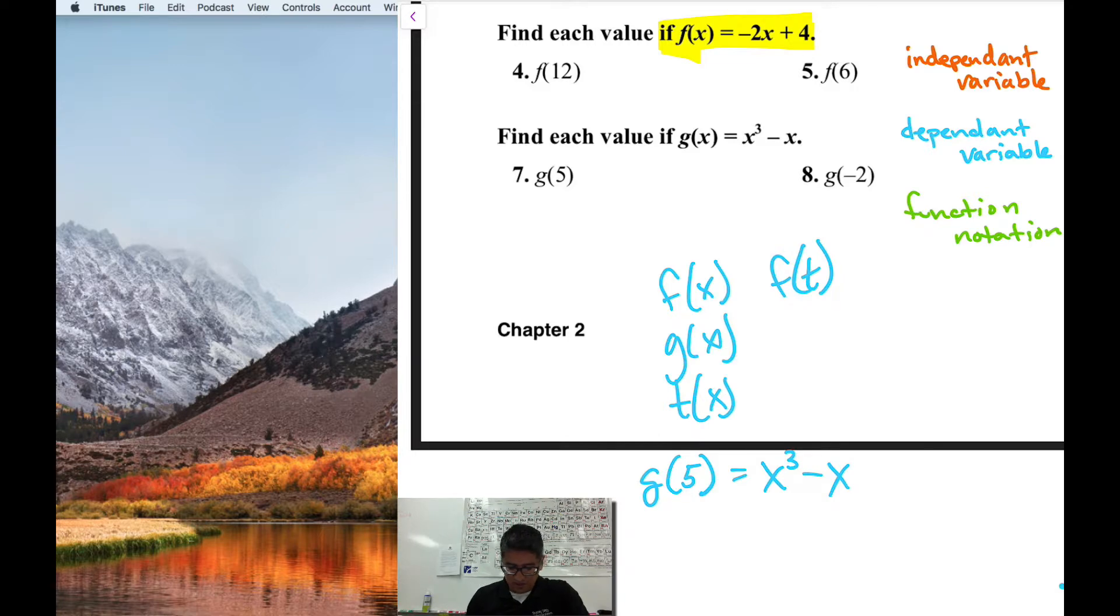So this function g of x, or g of 5, you work it out the same way. Wherever there is an x, I need to replace that x with whatever is inside the parentheses. And in this case it's a 5, so I do 5 cubed minus 5. And then 5 cubed is what, 125? 125 minus 5 is 120.